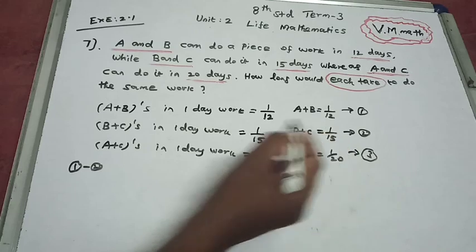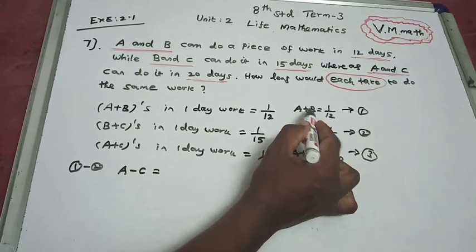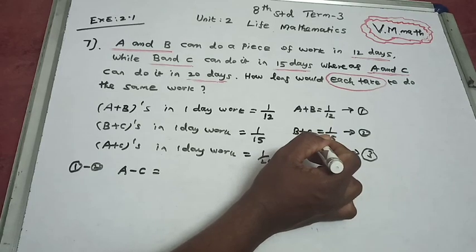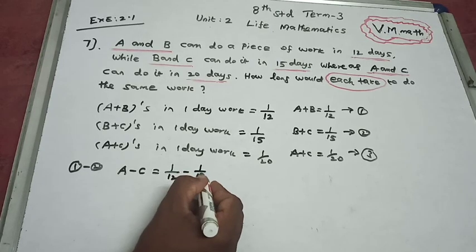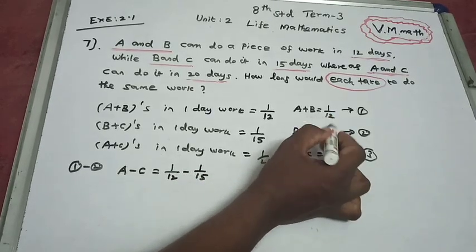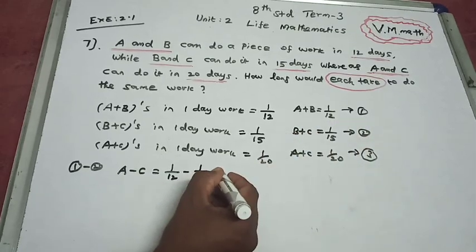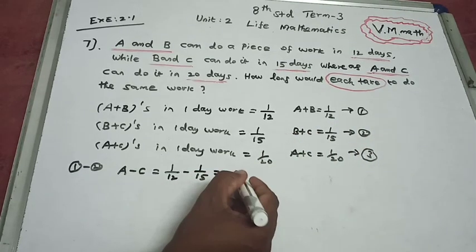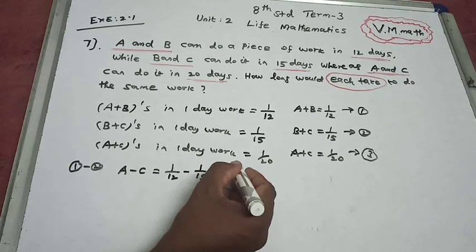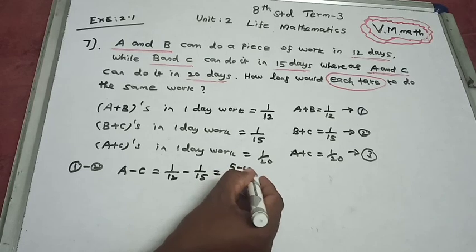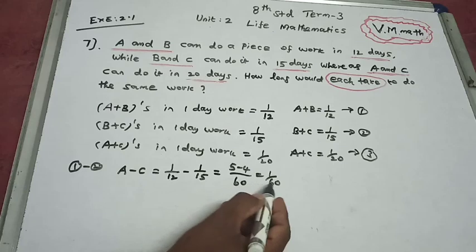Now we can reduce. Let's focus on A minus C. Subtracting equation 2 from equation 1: 1 divided by 12 minus 1 divided by 15. Taking the LCM of 60: 5 minus 4 equals 1, so A minus C equals 1 by 60.